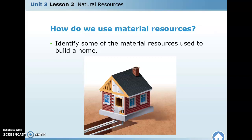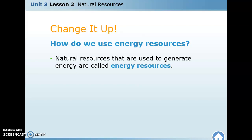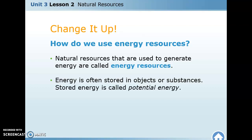Think about everything that goes into a house — the wood, the metal, the steel, the pipes, the circuits — all of it comes from the earth. We can also use resources like wood for energy: burn it to create energy. Natural resources used to generate energy are called energy resources — things like oil, wood, coal power plants, and nuclear power plants.